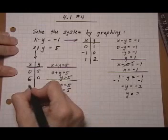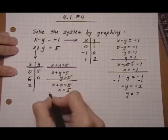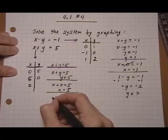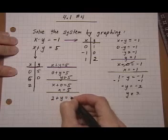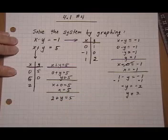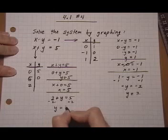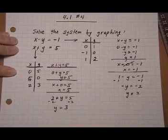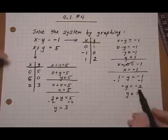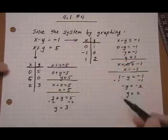And one extra point just to be safe. Let's go ahead and put in x is, how about two? We can put in whatever we want. That gives us two plus y equals five. Taking away two on both sides, we get y equals three. So now for both equations, we have three ordered pairs. Let's go ahead and graph them.